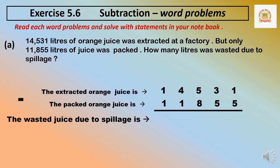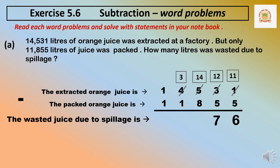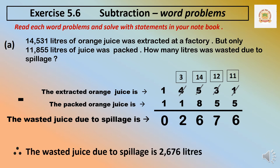In the 1's place, 1 minus 5 cannot be done, so we borrow from the 10's place. It will become 11. 11 minus 5 is 6. As 3 has given the number, it becomes 2. 2 cannot minus 5, so we borrow from the next number. The 5 becomes 12. 12 minus 5 is 7. In the hundreds place, already we took a number so it becomes 4. 4 cannot minus 8, so we borrow from the thousands place. That becomes 3,000 and this becomes 14. 14 minus 8 is 6. 3,000 minus 1,000 is 2,000. 10,000 minus 10,000 is 0. Therefore, the wasted juice due to spillage was 2,676 litres.